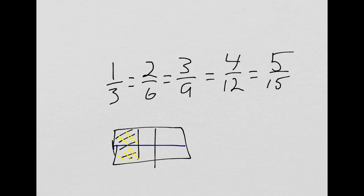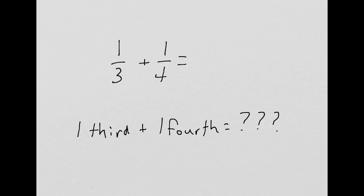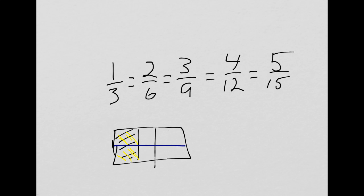So where were we going with this? We wanted to find out what 1/3 + 1/4 is. When I look at this string of equivalent fractions here, one stands out to me, and that's 4/12. Why that one stands out to me is that I can turn fourths into twelfths as well. If I had 1/4 and I multiply that by 3/3, which is equal to one, I see that 1/4 = 3/12.